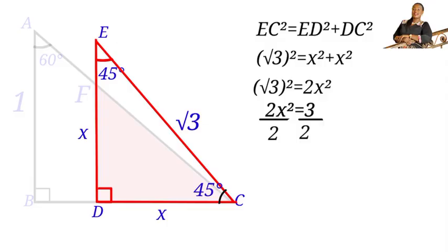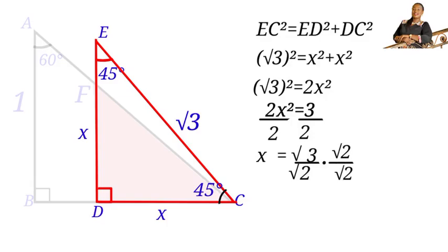Dividing both sides by 2 gives X² = 3/2. Taking the square root of both sides, X = √3 / √2. Rationalizing by multiplying numerator and denominator by √2 gives X = √6 / 2.